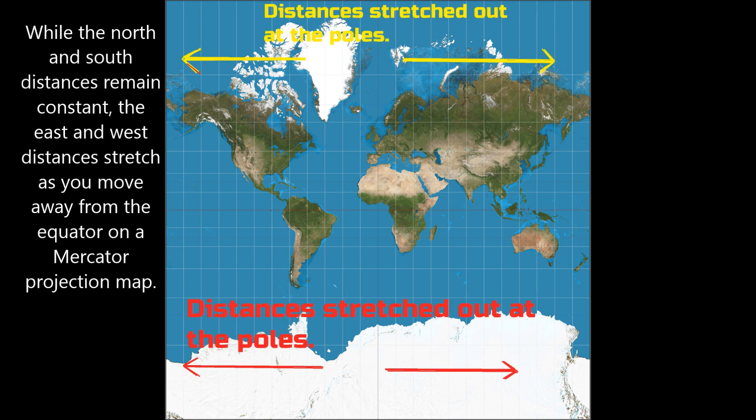While the north and south distances remain constant, east and west distances stretch as you move away from the equator on a Mercator projection map.